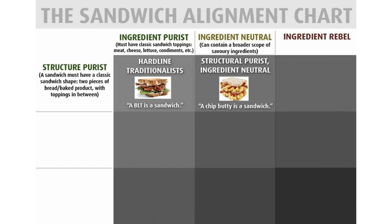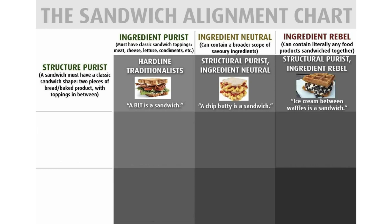The ingredient rebel — they can contain literally any food products sandwiched together. So a structural purist, ingredient rebel will say ice cream between waffles is a sandwich. Which I guess is an ice cream sandwich, so it's kind of traditional, but ice cream isn't usually in a sandwich, so that counts.